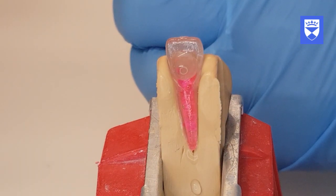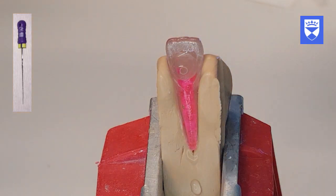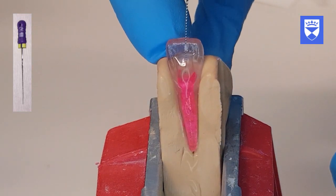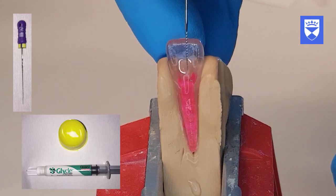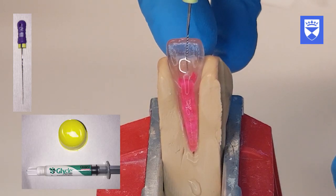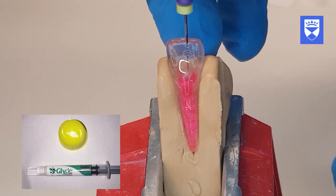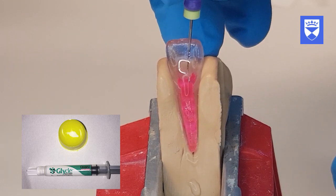Take the size 10 flexor file and set the rubber stop to the estimated working length. Coat the flexor file lightly in a chelating paste lubricant. You may also want to pre-bend the file if the canal morphology is curved.